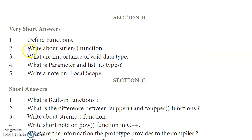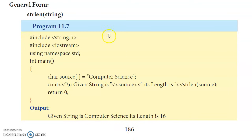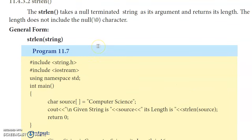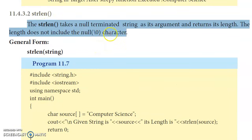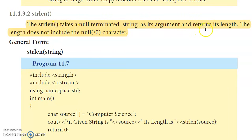Second question: write about the strlen function. From page 186, strlen takes a null-terminated string as its argument and returns its length. The length does not include the null character. The general form is: strlen(string).